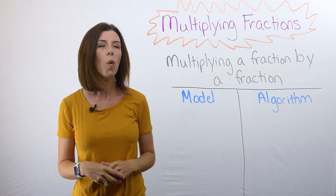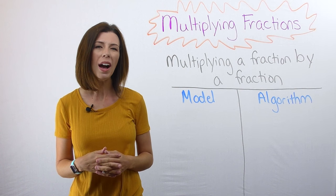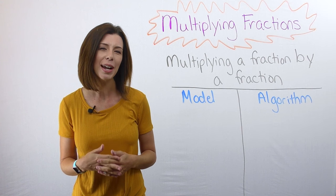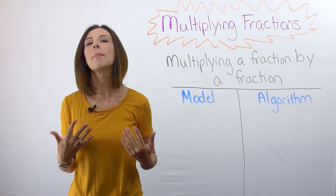Have you ever thought about why we multiply fractions the way that we do? In other words, why is two-thirds times one-half, two-sixths? How do we get that? How do we show that with a model?